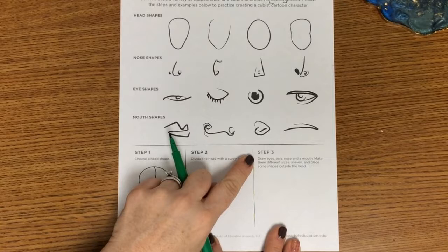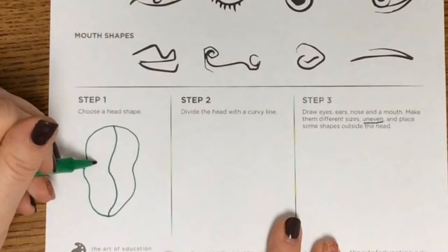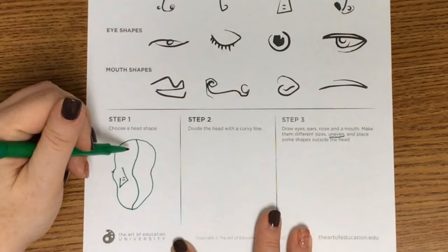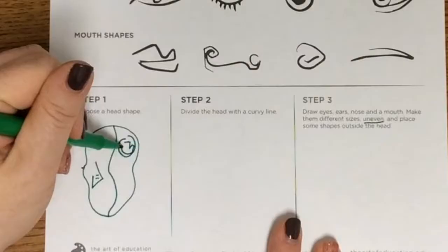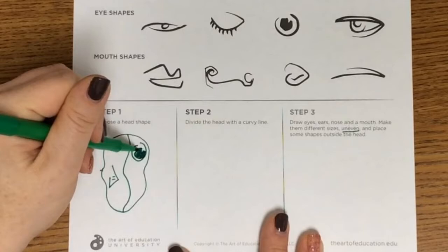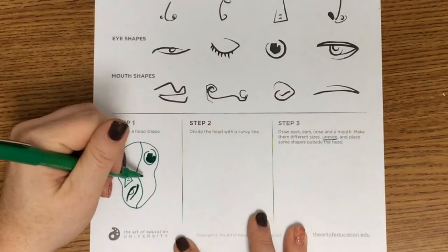The last step says draw eyes, ears, nose, and a mouth, but make them different sizes and uneven. Uneven means they're not on the same level — you know how our eyes are pretty much even on our head? What if you drew one down and one way above? That's kind of how Picasso did it. It even says place some shapes outside of the head. So play with adding your eyes, ears, mouth, and nose all wonky all over your face, and let's see what crazy Picasso cubist characters we come up with.